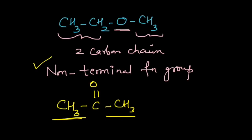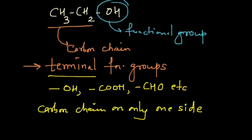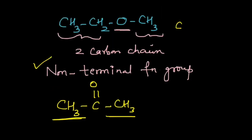Metamerism is only shown by compounds which have non-terminal functional groups. So does an alcohol show metamerism? No. What about the acid CH₃–C=O–OH? The carbon chain is present on only one side, so this will also not show metamerism. Metamerism is only shown by compounds which have non-terminal functional groups. Let's take a few examples to see metamerism in action.